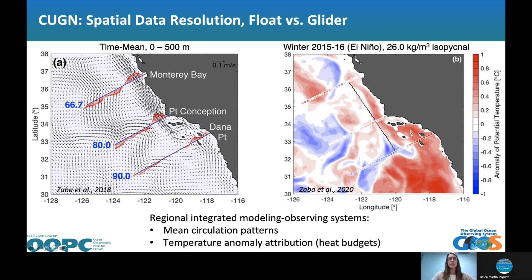The spatial resolution of glider data is incredibly valuable both scientifically and for assimilation into models. In these two panels — showing glider data alongside model data from the California State Estimate produced at Scripps Institution of Oceanography by Bruce Cornuelle — when integrated into models, the data help us see mean circulation patterns especially close to shore. The combined use of model and data is also very useful for temperature anomaly attribution, specifically for calculating heat budgets.